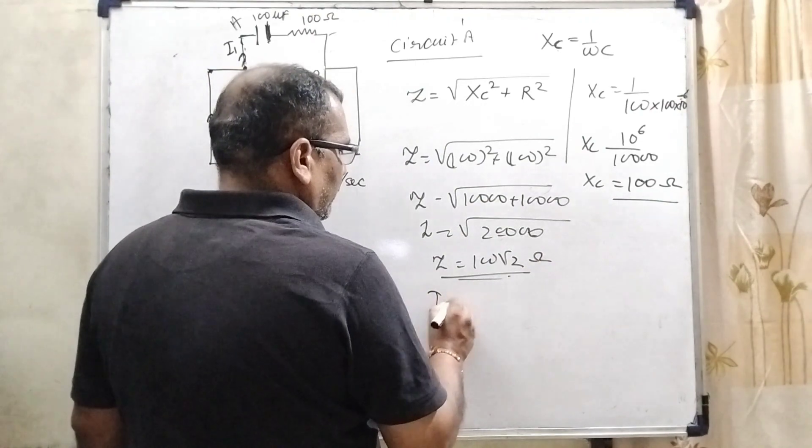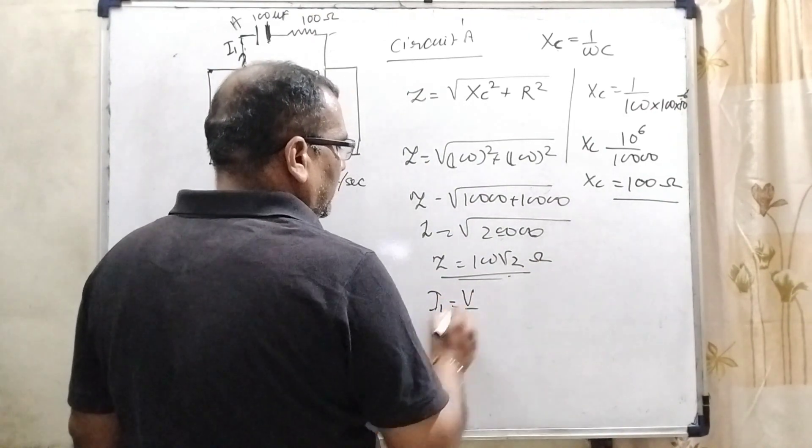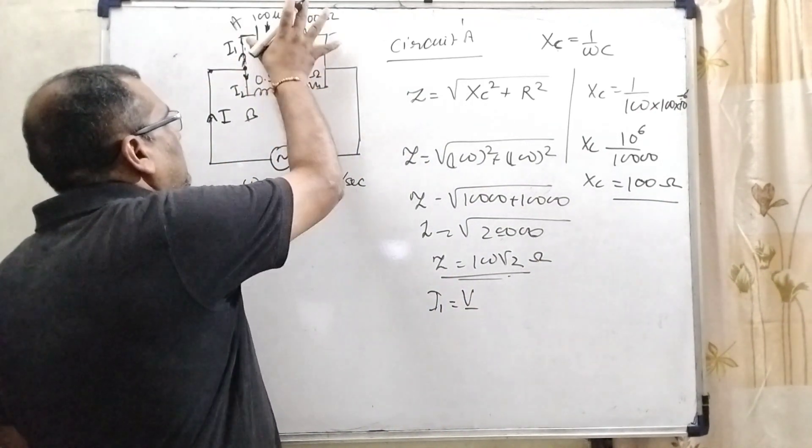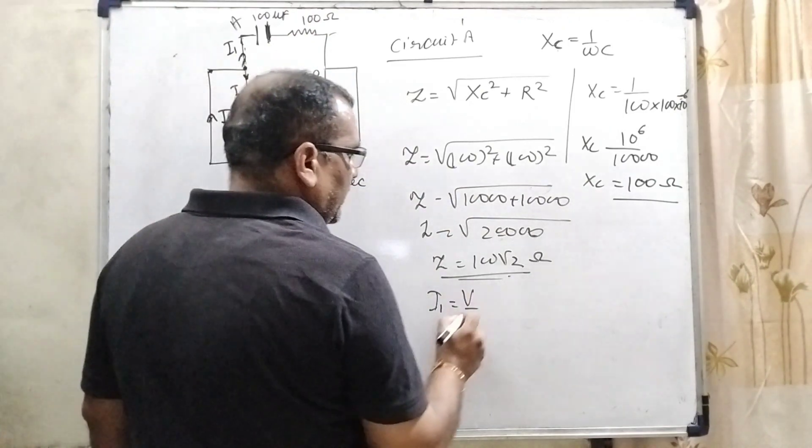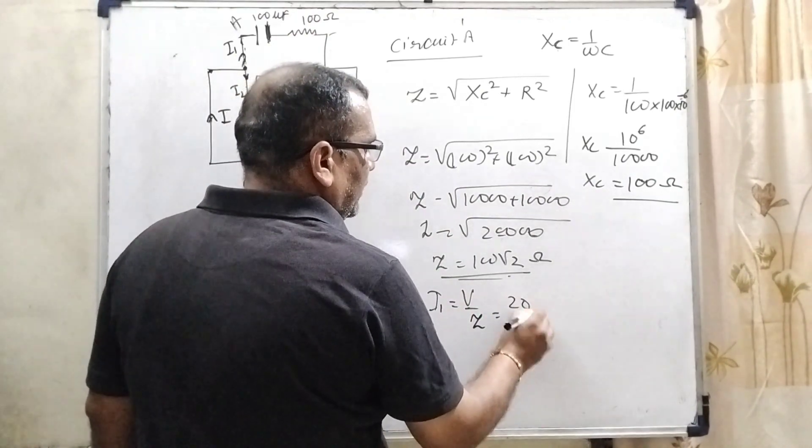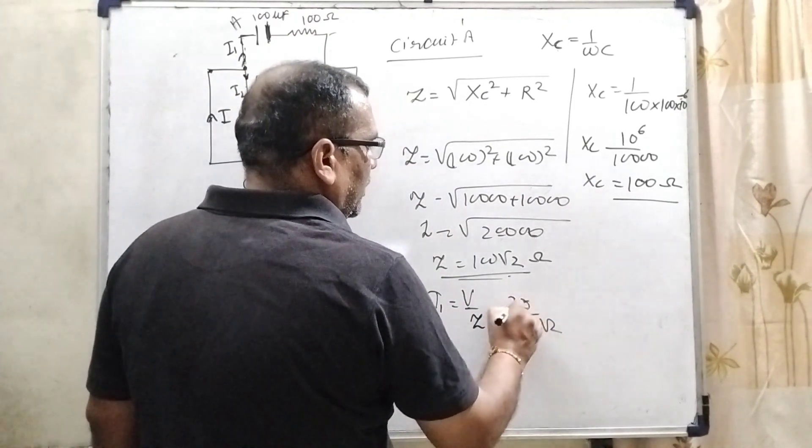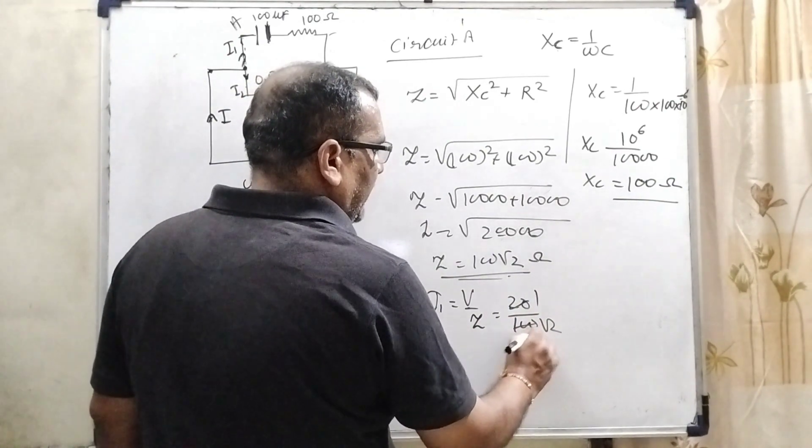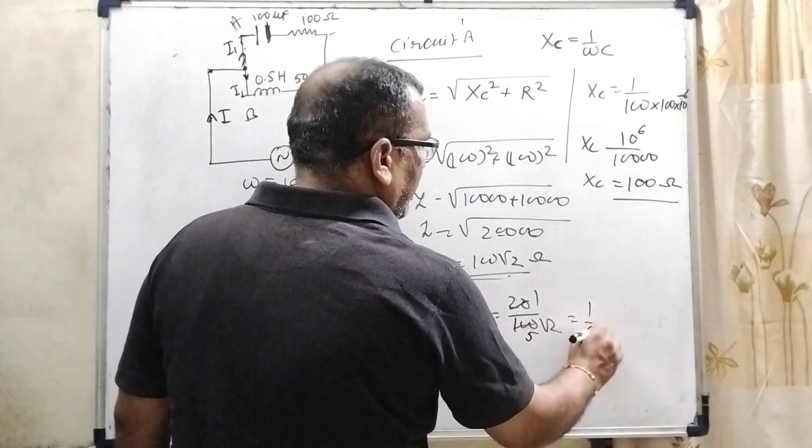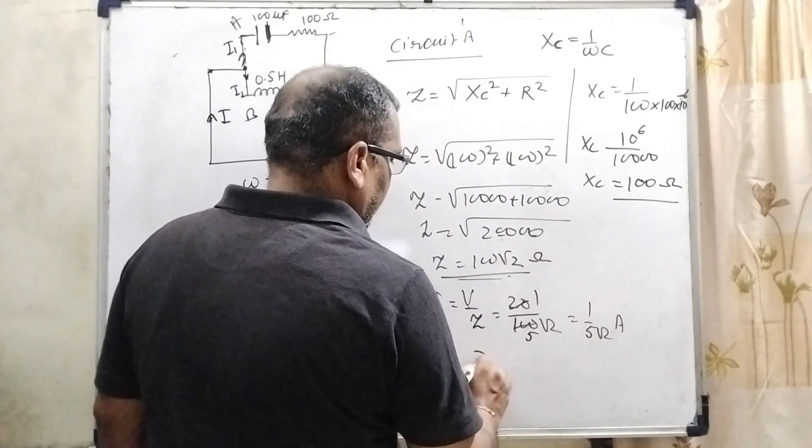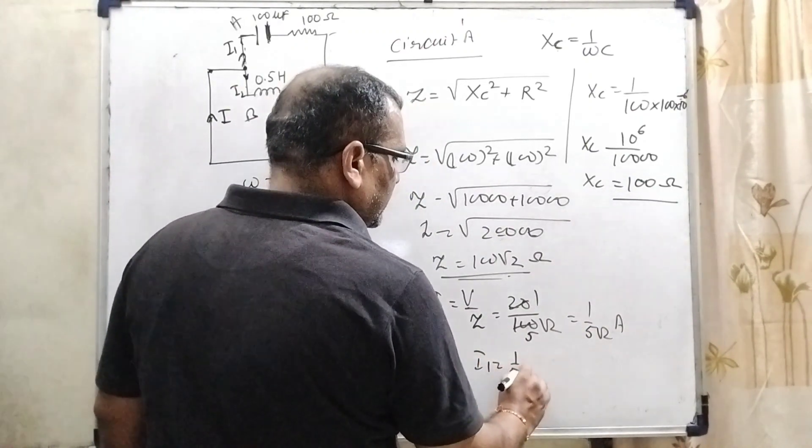Here we get Z. And for I1, what is I1? Potential. Here, this whole system is in parallel. So there is potential divided by Z. That is 20 divided by 100 root 2. 21s are 20, and 25s are 100. Then 1 upon 5 root 2 ampere. That is I1. Is it clear?